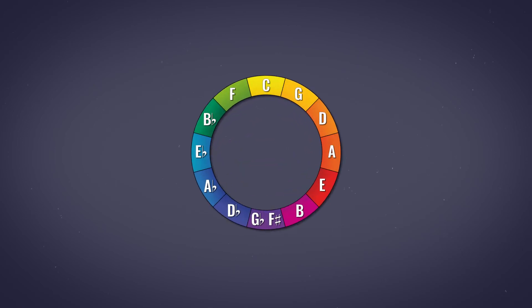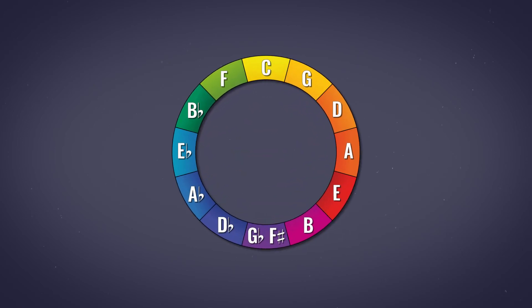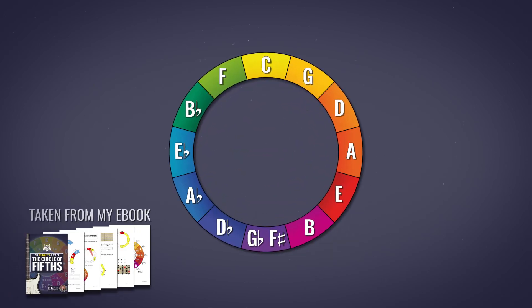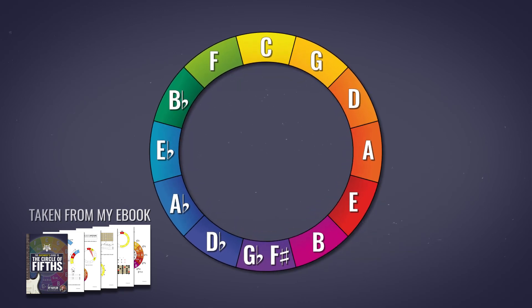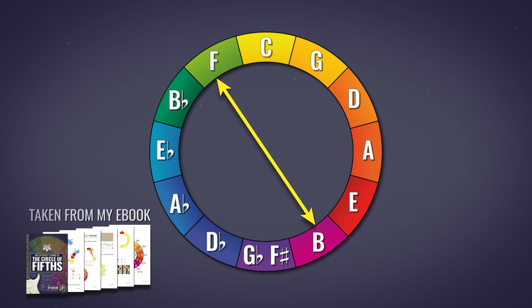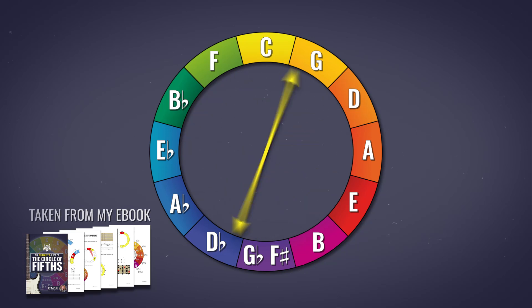On the circle of fifths, the tritone notes sit directly opposite one another. See B at five o'clock — you'll find the F opposite at the eleven o'clock position. And that works for all of the tritones.